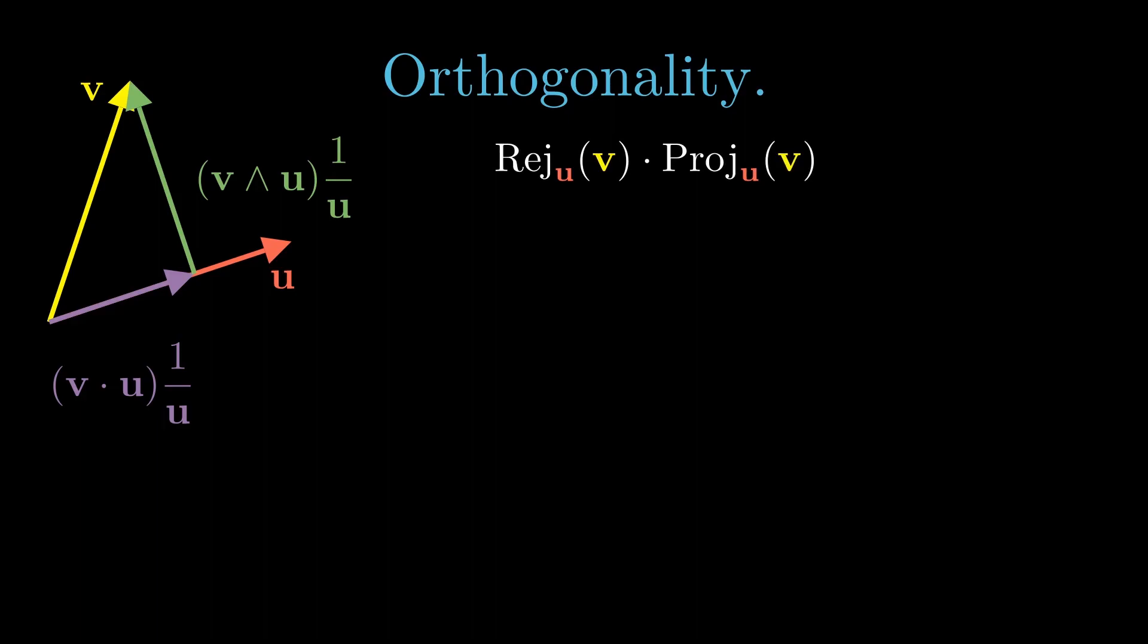Using this idea, we write the dot product of the rejection and the projection of v. We plug in our expressions, and we factor out our scalar terms. u inverse squared is also a scalar, so we can pull that out of the scalar selection. We're left with the scalar selection of v wedged with u, which is a bi-vector. The scalar selection of the bi-vector is zero. This shows that the rejection and the projection are orthogonal.